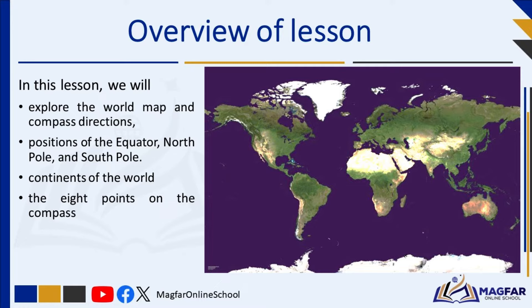There are four main directions, or cardinal directions: North, South, East, and West. But there are also intermediate directions if we move diagonally: Northeast, Northwest, Southeast, and Southwest. We will also learn about these.